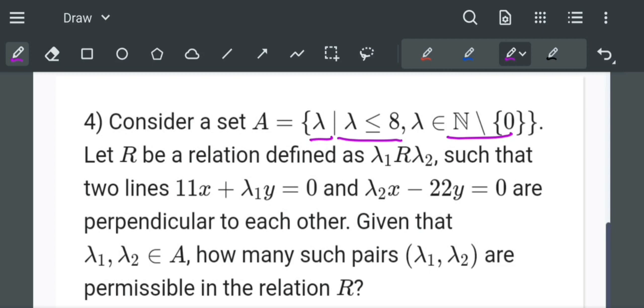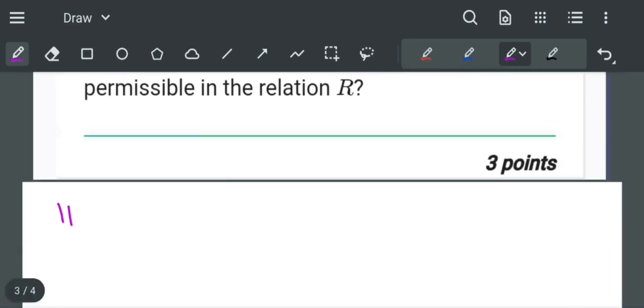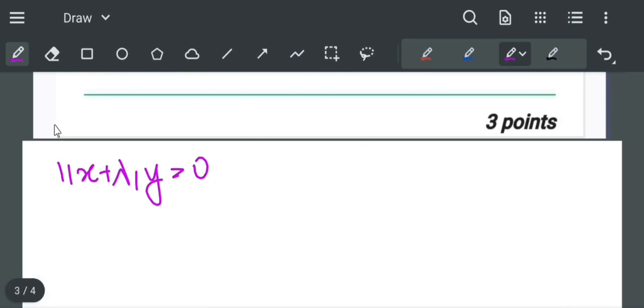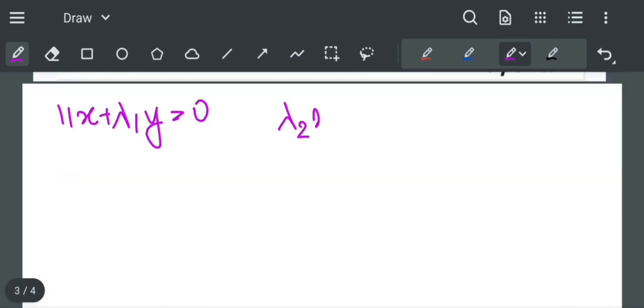Let R be a relation defined by λ₁Rλ₂ such that two lines 11x + λ₁y = 0 and λ₂x - 22y = 0 are perpendicular to each other.